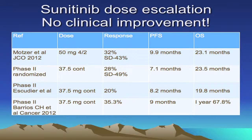However, clinical studies show that this did not quite result in actual improvement in efficacy. The Mozer study compared patients on 50 mg for four weeks on/two weeks off with patients on 37.5 mg continuous schedule. When looking at median progression-free survival or overall survival, there was actually no difference — and perhaps slightly inferior outcomes with continuous dosing compared to the four weeks on/two weeks off schedule.